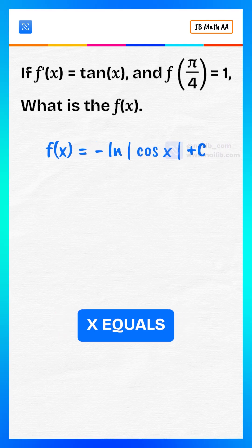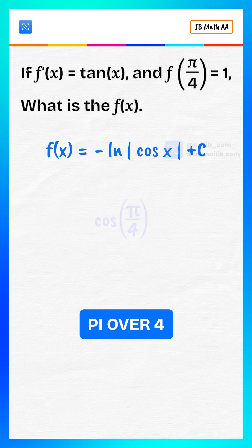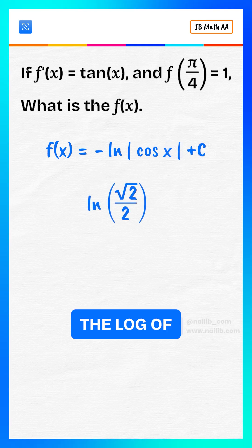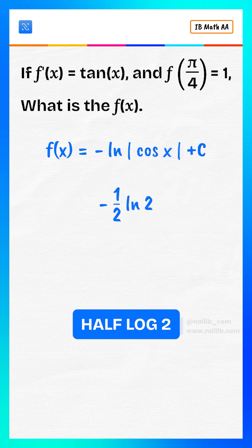To find the constant, we plug in x equals pi over 4. Cosine of pi over 4 is square root of 2 divided by 2, and the log of that is negative 1 half log 2.